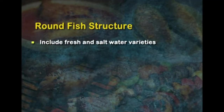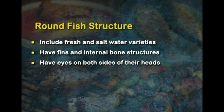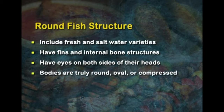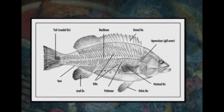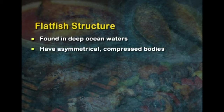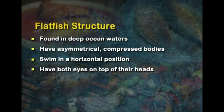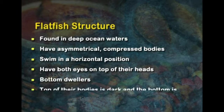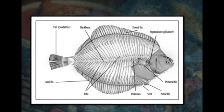Round fish include both saltwater and freshwater varieties. They have fins and internal bone structures, eyes on both sides of their heads, and bodies that are truly round, oval or compressed. Flat fish are found in ocean waters and have asymmetrical and compressed bodies. They swim in a horizontal position, have both eyes on top of their heads, dwell at the bottom of the waters, and their top is dark while the bottom is lighter in color.